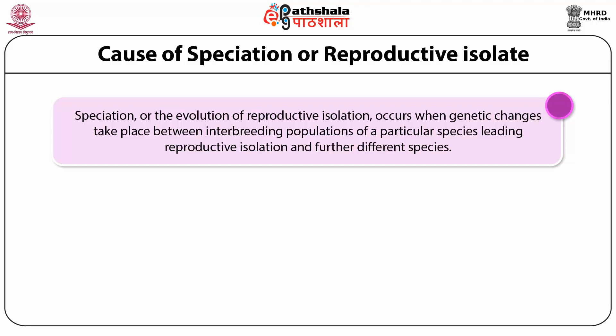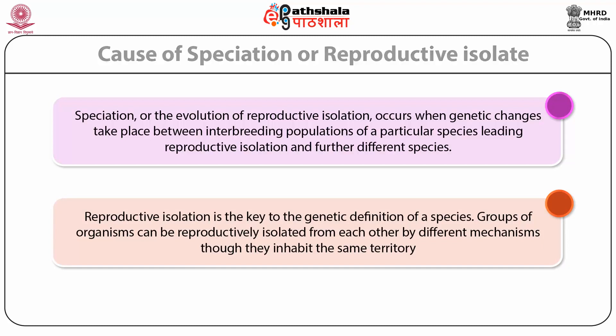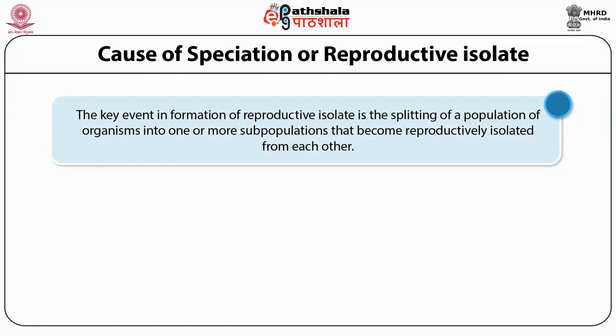Each species is reproductively isolated from each other species. It is noteworthy that organisms can be reproductively isolated through easily recognized phenotypic characteristics or not. Such organisms in taxonomy would be regarded as a single species, but in genetics and evolution as separate species. Similarly, organisms may not be able to reproductively isolate but have different phenotypic characteristics. With fossilized organisms, we are limited in the taxonomic definition. Reproductive isolation is a key to the genetic definition of species.